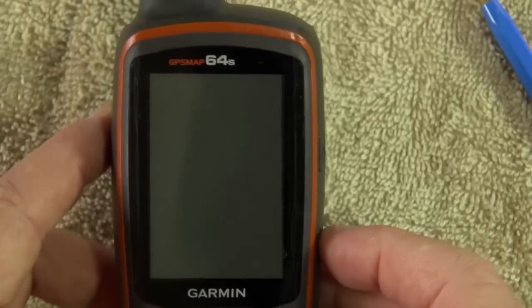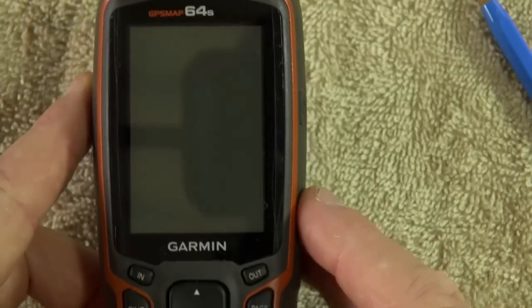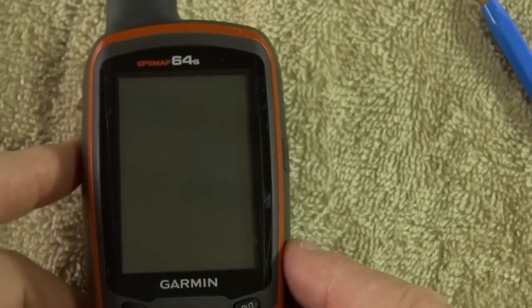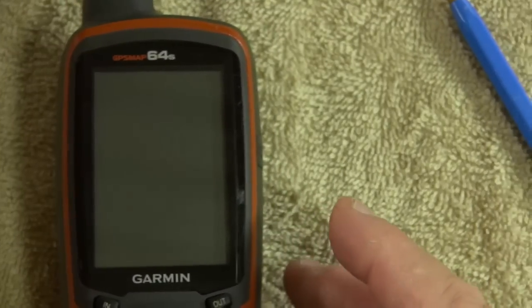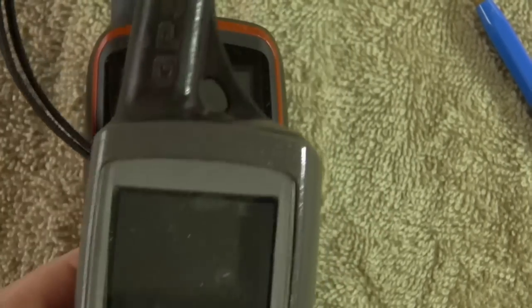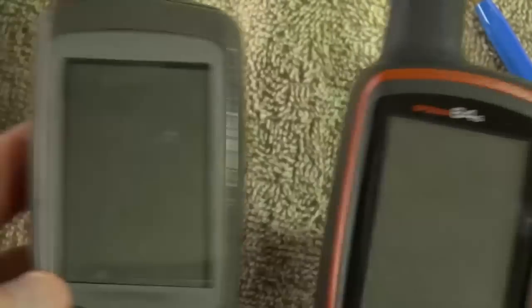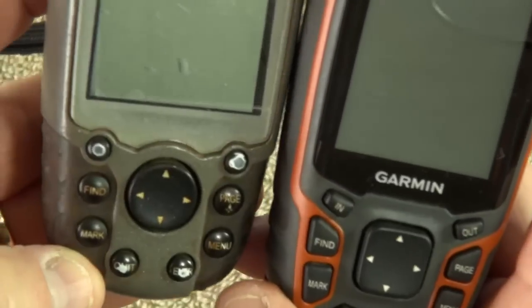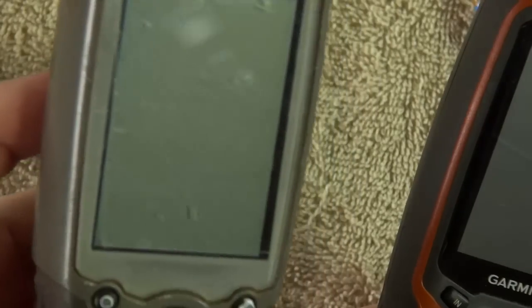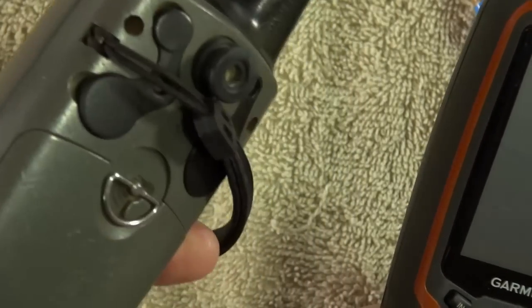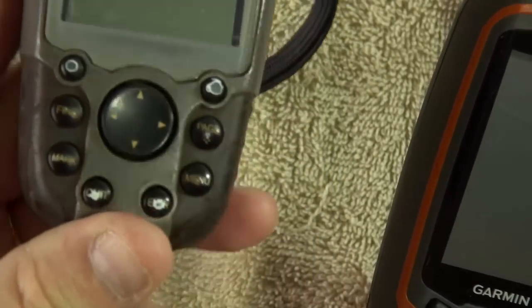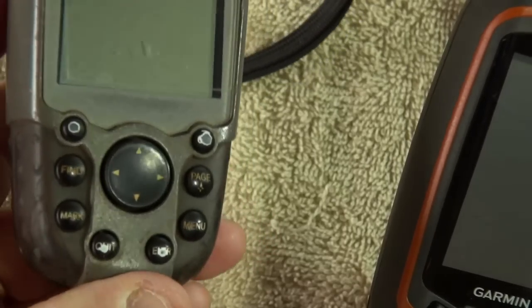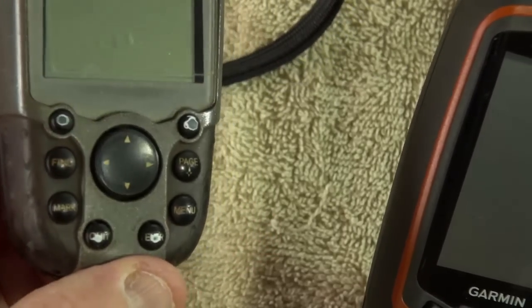I'm using today the GPS 64S. This is one that I borrowed off my friend. I actually use this old looking thing. They look identical, just in colour. This one is the one I'm using. You can see it's all scratched and beaten up.